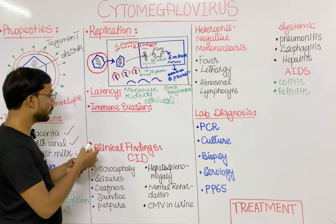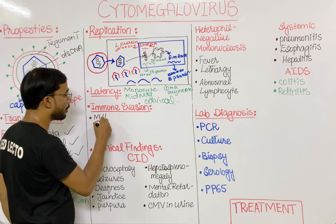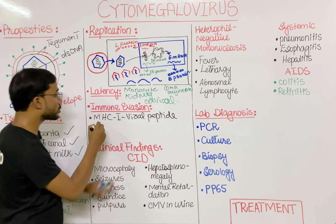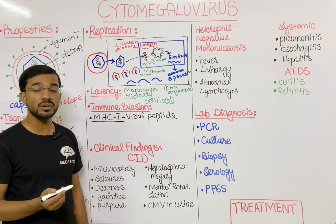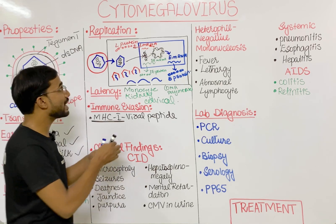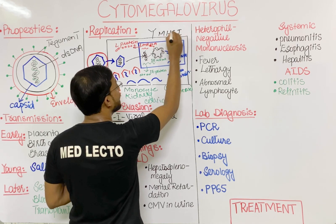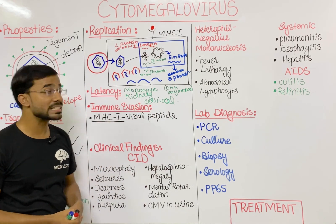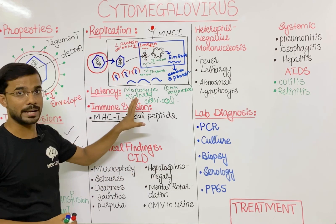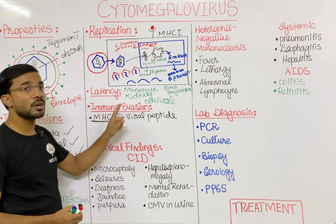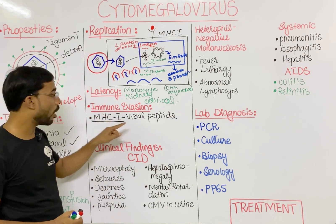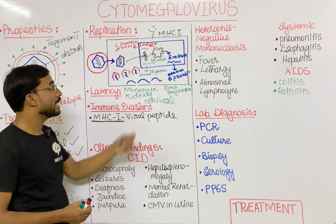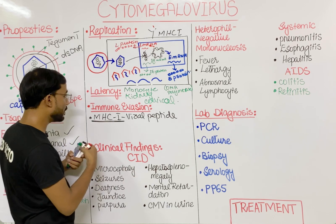Next, let's look at immune evasion — how cytomegalovirus protects itself from the immune system. First, consider MHC class I and viral peptide instability. MHC class I molecules present viral peptides on the cell surface, which are detected by cytotoxic T-cells that destroy the infected cell. However, cytomegalovirus makes a weak bond with MHC class I, so ultimately there is no presentation of the viral peptide on the cell surface, and CMV can survive inside the cell.